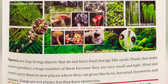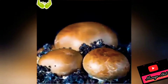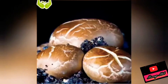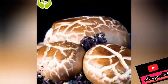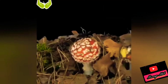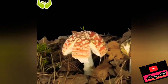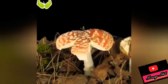You might be wondering: what are spores? Spores are tiny living objects that do not have food storage like seeds. Plants that make spores produce a huge number of them because they are very small and light. Wind and water carry them to a new place where they can grow into a new plant.